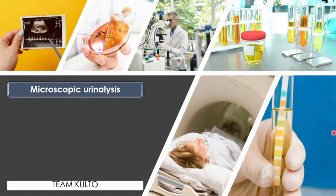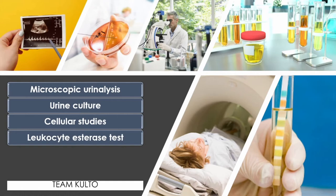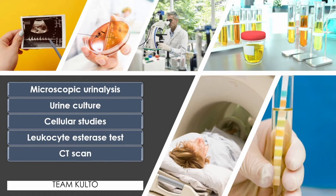Third, cellular studies — a patient with cystitis usually has microscopic hematuria and pyuria. Fourth, leukocyte esterase test — a dipstick test that includes testing for WBCs and nitrates. Fifth, a CT scan may detect pyelonephritis or abscesses. Sixth, ultrasonography — ultrasound is extremely sensitive for detecting obstruction, abscess, tumors, and cysts, and remember that tumors are one of the causes of cystitis.